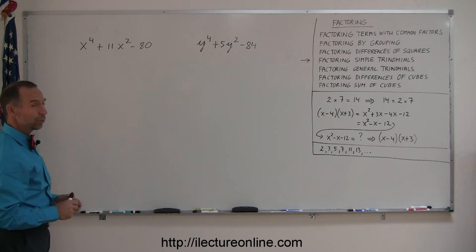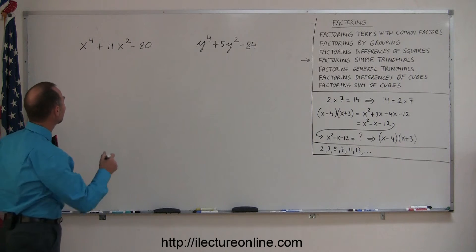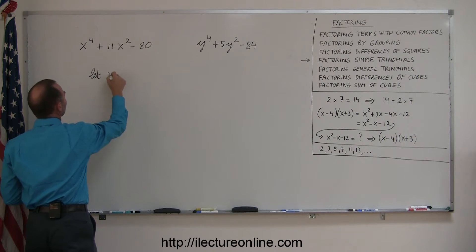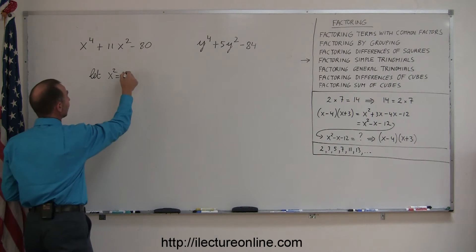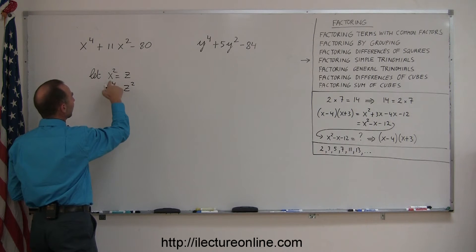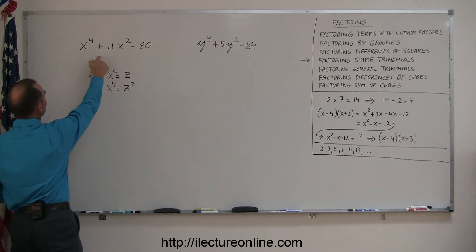But actually if you do a small transformation, or what we call in mathematics a substitution, we can change it into a form that you're more familiar with. If you let the square term equal a letter to the first power, like z to the first power, and then x to the fourth equal z squared, because if you square both sides, x squared you get x to the fourth, z squared you get z squared, then you can substitute that back into the equation.